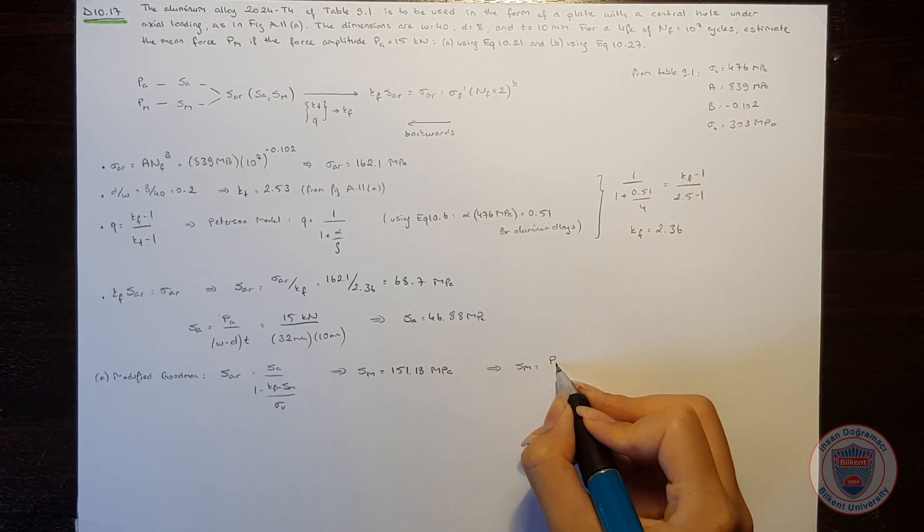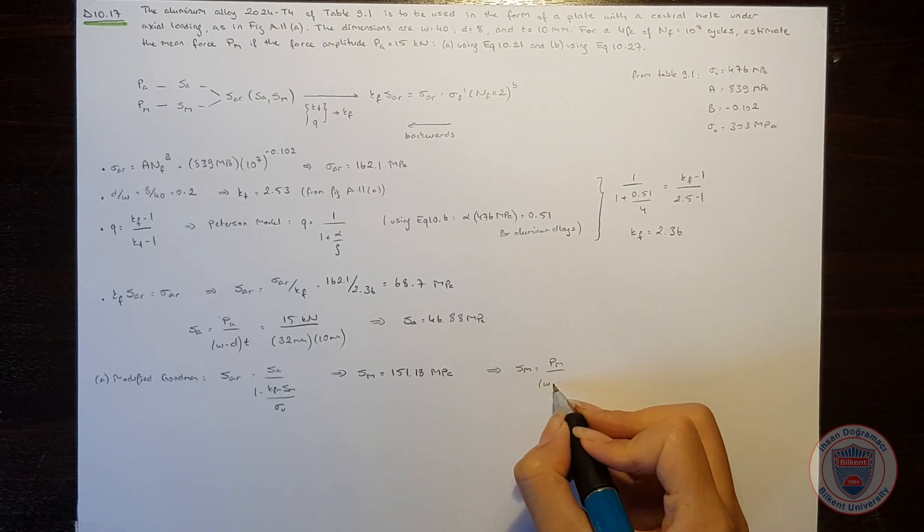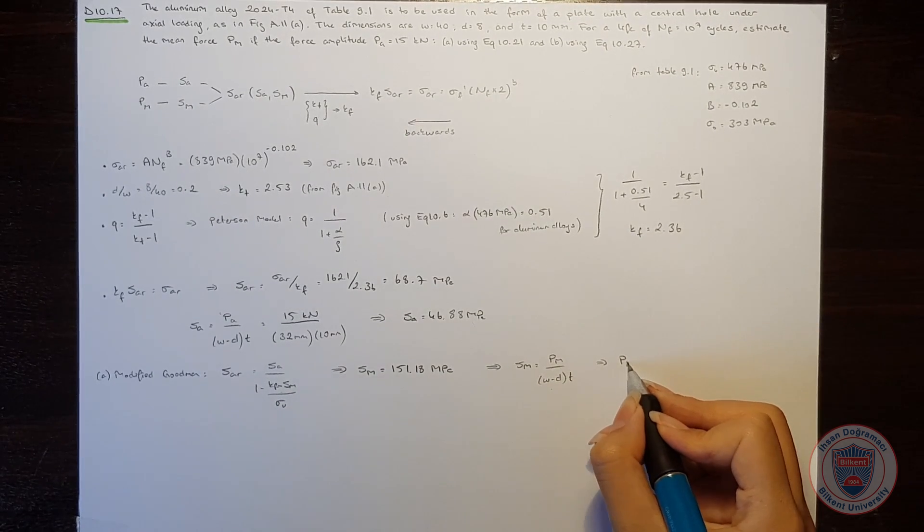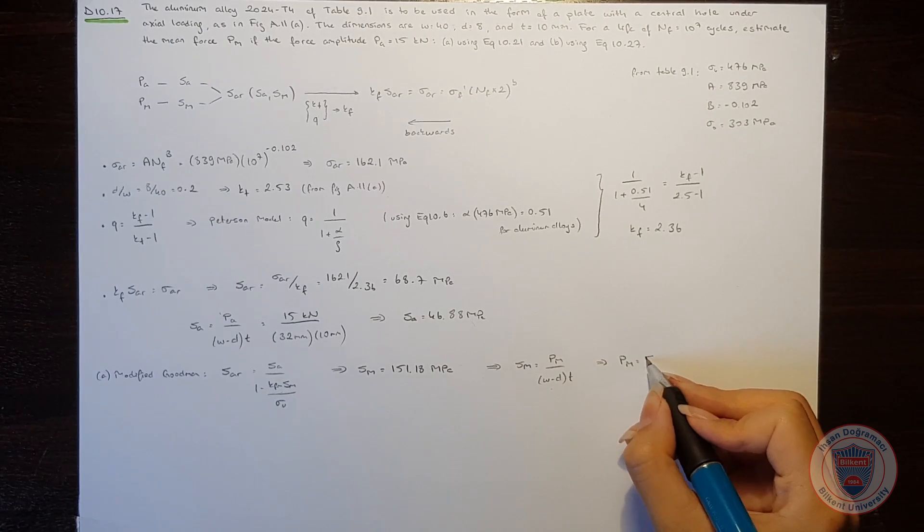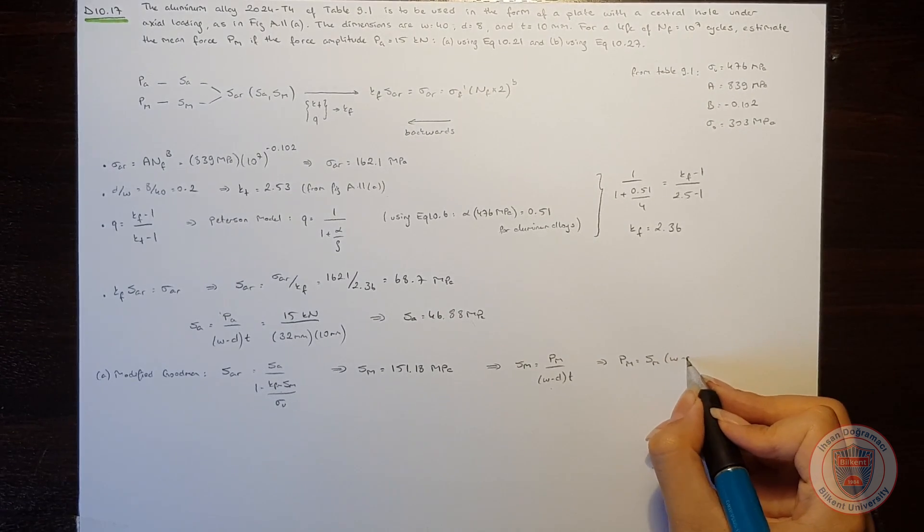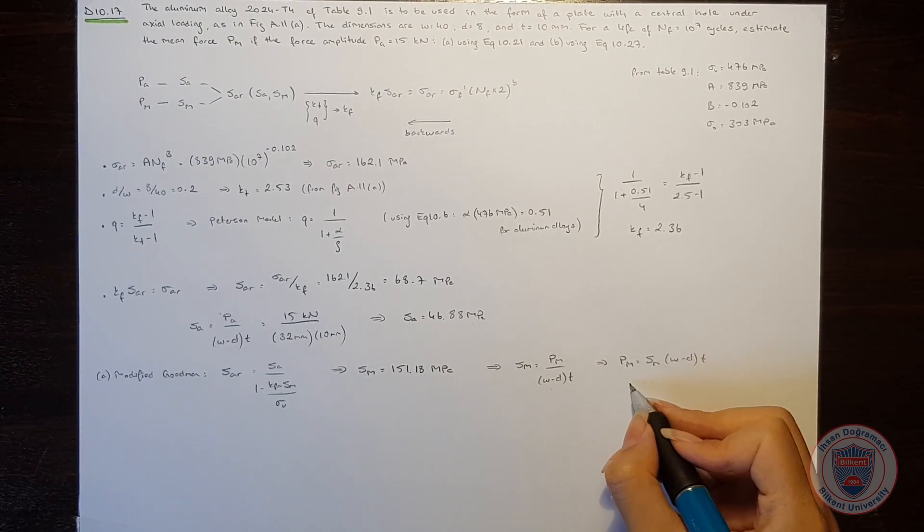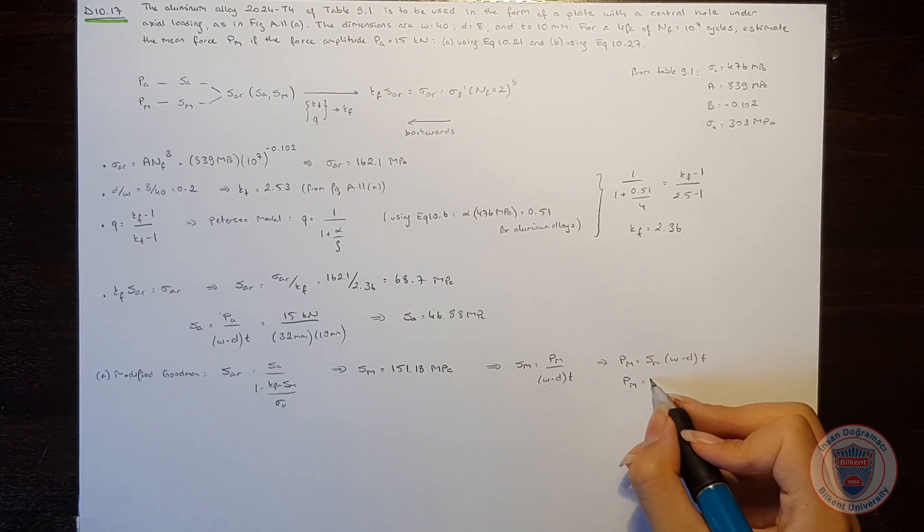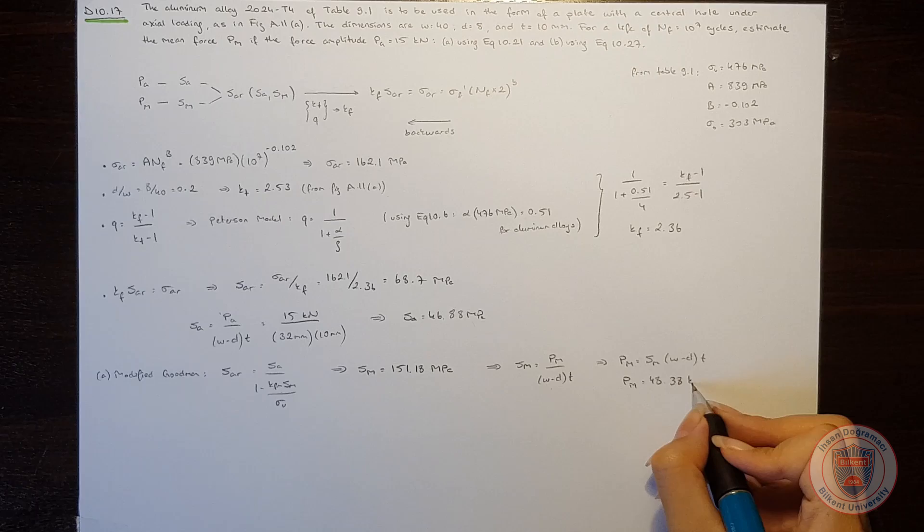So SM is equal to PM over W minus D times T. So that PM is equal to SM times W minus D times T which will be equal to 48.38 kN.